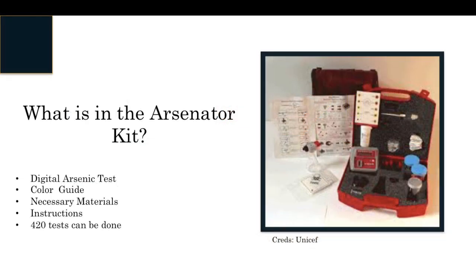The arsenator kit includes a digital photometer to give accurate digital readings. It includes a color scheme to see how much arsenic the rice actually has. It includes all the actual materials needed in order to work the kit properly. The kit is a bright red color and it is small and easy to move around and work with. In the kit, there is also a set of instructions to follow. And lastly, the kit can be used for over 420 tests.